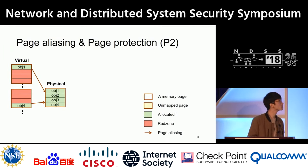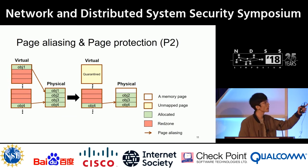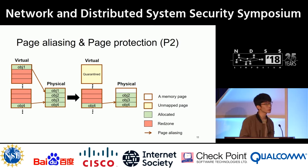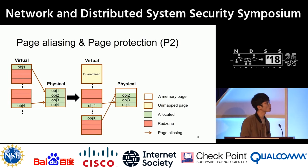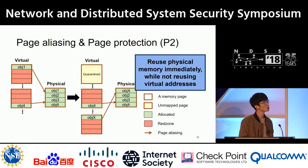To support a large quarantine zone, we utilize both page aliasing and page protection. When deallocating an object, we simply unmap the corresponding virtual page, and that virtual page will not be reused until all virtual pages are exhausted — since we have a much larger virtual address space, reuse happens very late. To minimize physical memory use, the deallocated region in physical memory can be reused by another object via page aliasing. So we reuse physical memory immediately while not reusing the virtual page address, meaning the quarantine zone does not occupy physical memory.